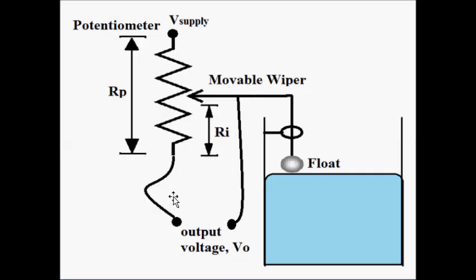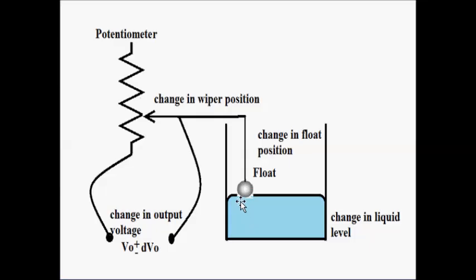With the use of a linear potentiometer, we have converted liquid level into an output voltage Vo. When the liquid level is at a certain level, this gives us an output voltage Vo. When the liquid level decreases, the float comes down, the wiper also comes down, the output resistance changes, and as a result the output voltage taken across the two terminals changes.